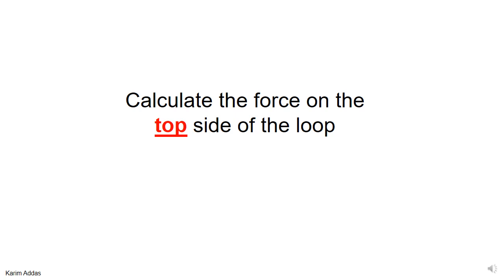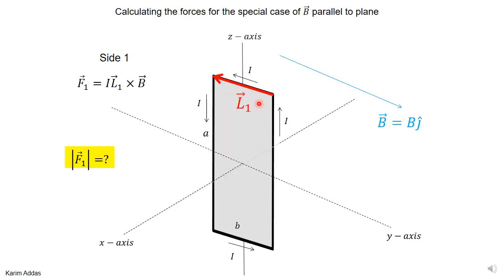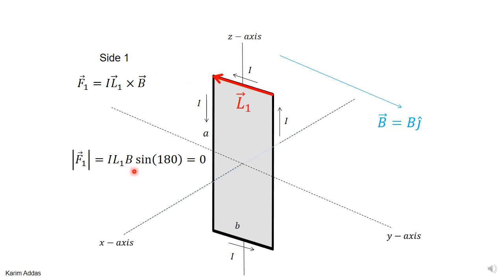We want to first calculate the force on the top side of the loop. For any segment of wire in a uniform magnetic field, we use the rule where L1 is a vector pointing from the beginning to the end of that piece of wire. The L1 vector points in the minus Y direction and B points in the plus Y direction, so the angle between them is 180 degrees.